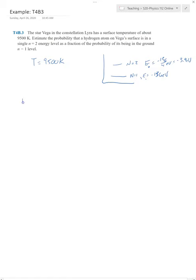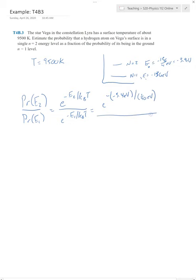Okay, so the probability of being in energy 2 divided by the probability of being in energy 1 is just the Boltzmann factor of E2, E to the minus E2 over KBT, divided by E to the minus E1 divided by KBT. And so we can just go ahead and plug in those numbers. So E2 is E to the minus, and you have to make sure you include the negative sign, 3.4 eV.